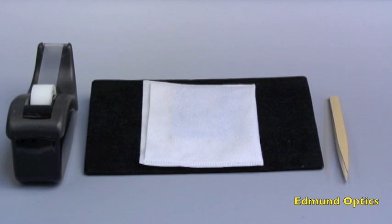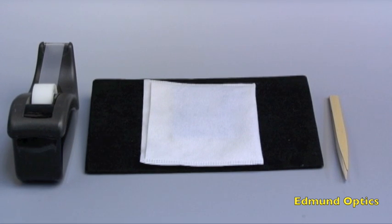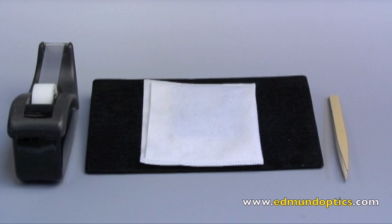Many of our optics, namely our windows and mirrors, ship with a protective plastic coating adhered to the front and back surfaces. This coating is used to protect the surfaces from scratches during packing and shipping. This video highlights how to identify and safely remove protective plastic coatings in preparation for using an optic in one's application.